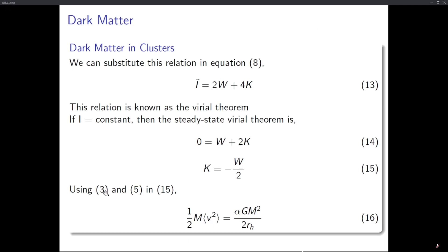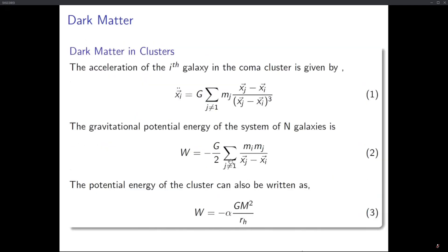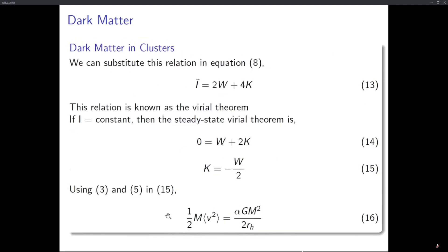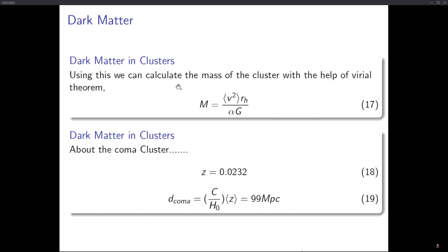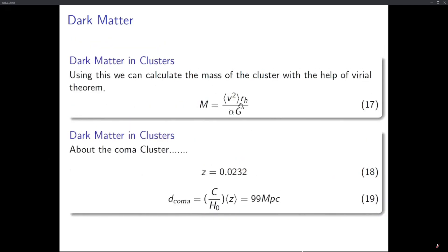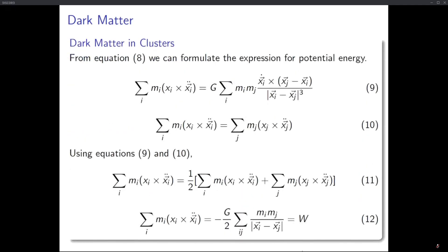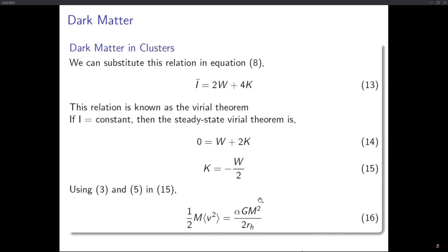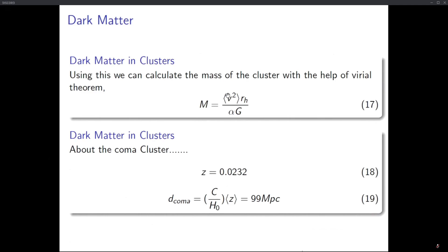Using equations 3 and 5 together with equation 15, we arrive at equation 16: (1/2) M times the average of V² equals alpha G M² divided by (2 r_h). Rearranging, we can calculate the mass of the cluster. The mass M equals the average of V² times r_h divided by (alpha times G).